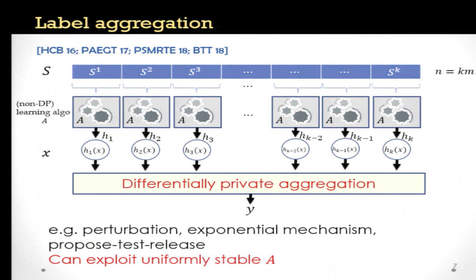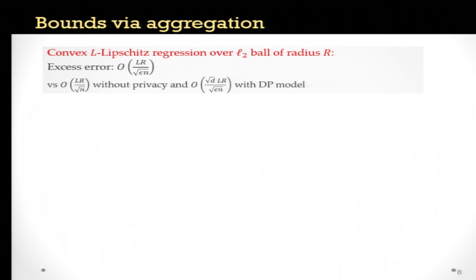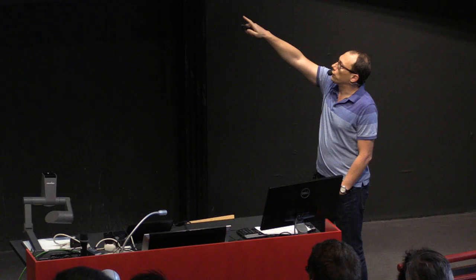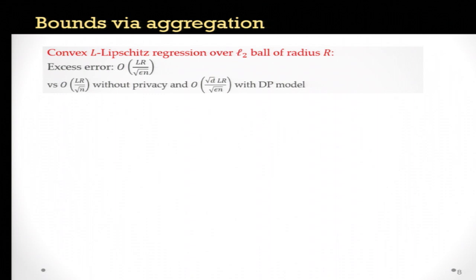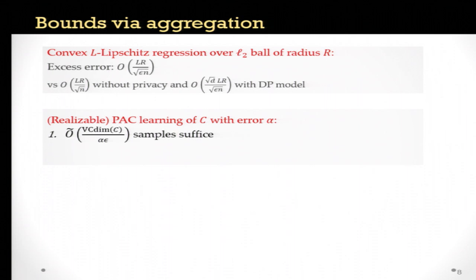For this simple baseline, we prove that for convex regression problems over an L2 ball of radius R, it achieves excess error scaling roughly as LR over the square root of epsilon times N — only a square root of epsilon factor worse than without privacy. Most importantly, we remove the dependence on dimension d that was present in the previous model. We then look at classification in the realizable PAC model, where we show that one can achieve accuracy error alpha with overhead of just roughly one over epsilon.